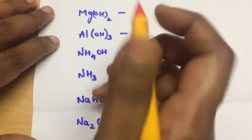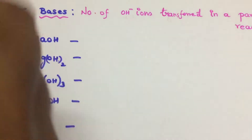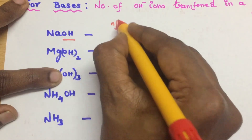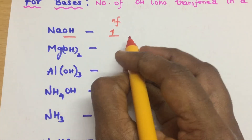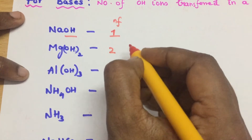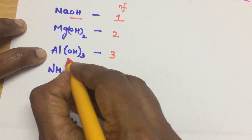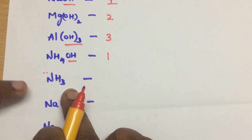Next come bases — very simple. N-factor for a base is the number of OH- ions that can be transferred. For NaOH, OH is 1, so N-factor = 1. For Mg(OH)2, maximum N-factor is 2. For Al(OH)3, maximum N-factor is 3. For NH4OH, N-factor = 1. Ammonia is a Lewis base — it does not have OH but it is still a base.